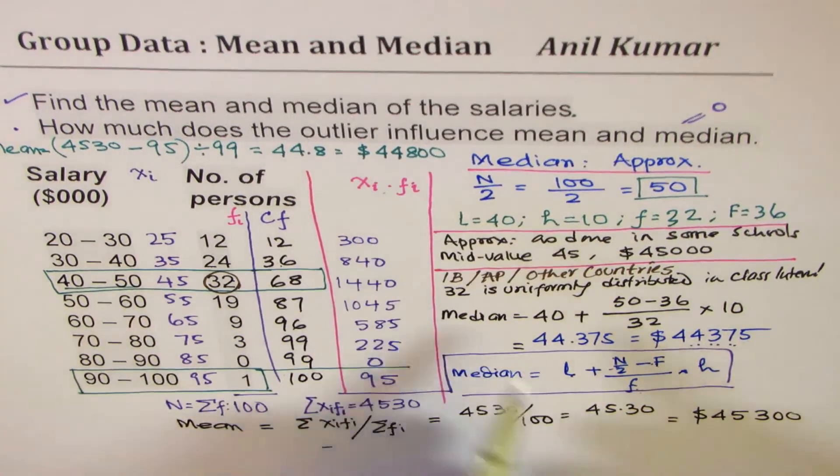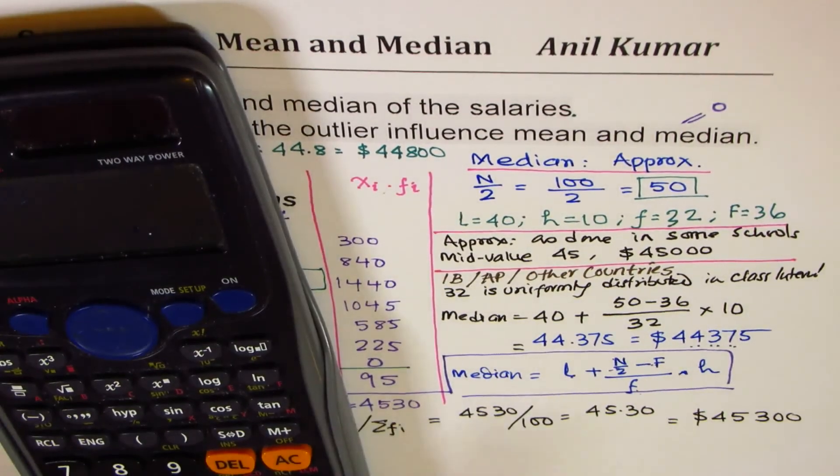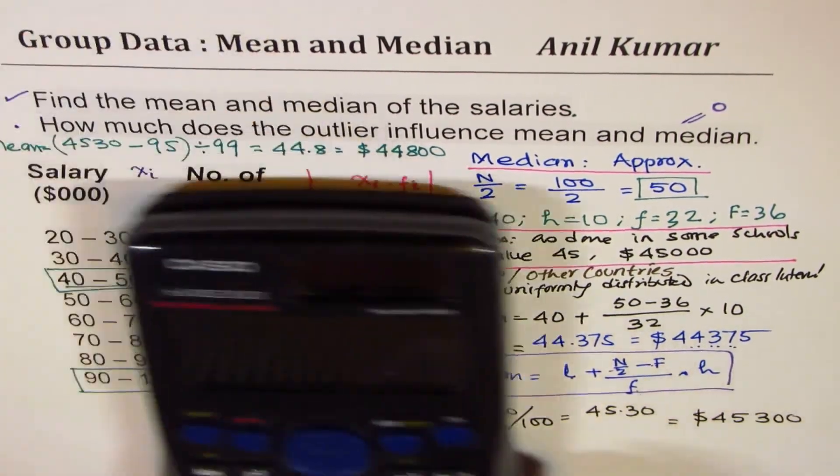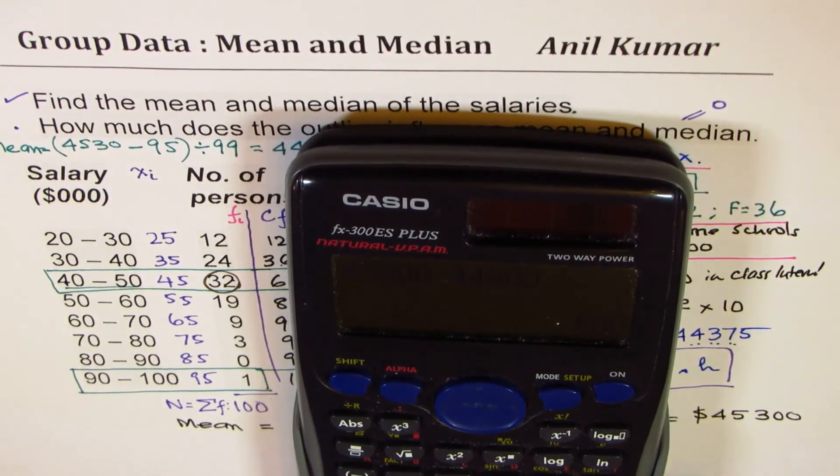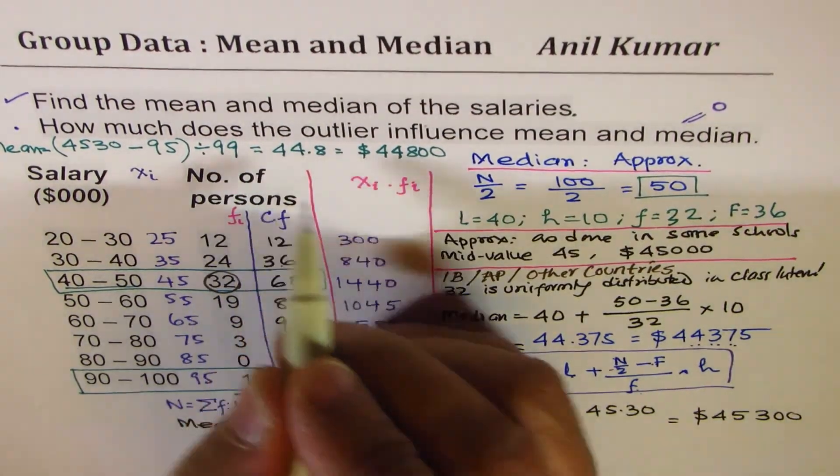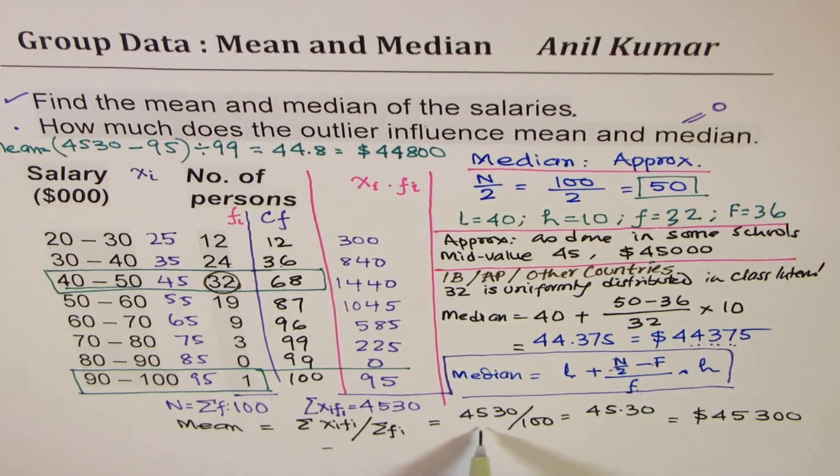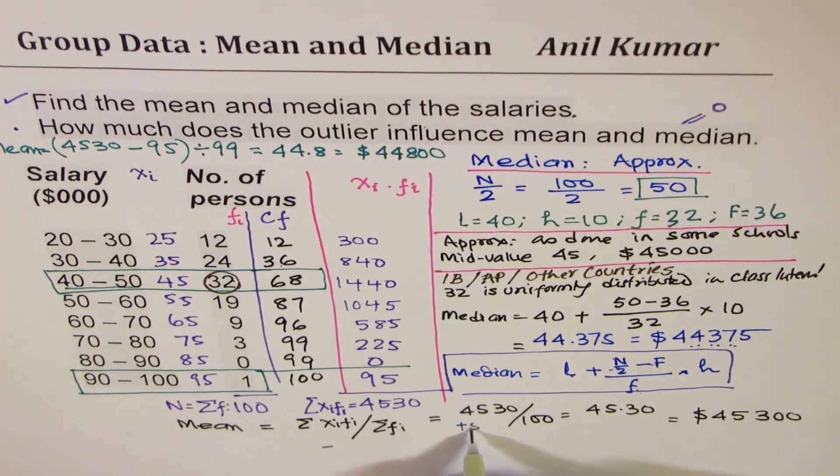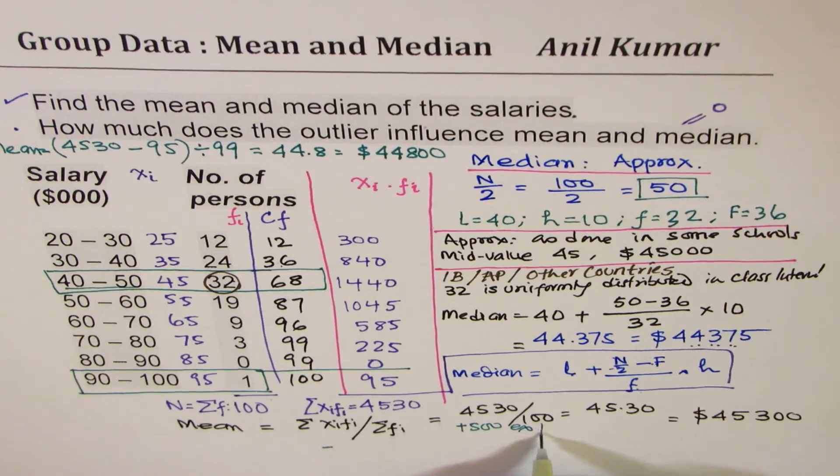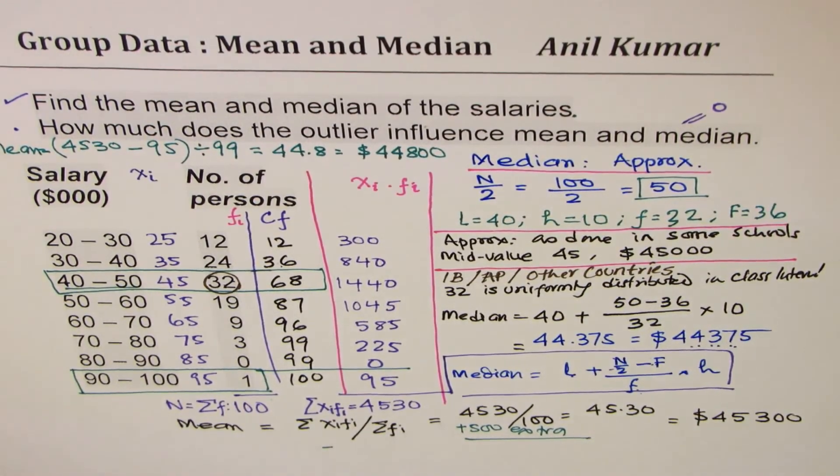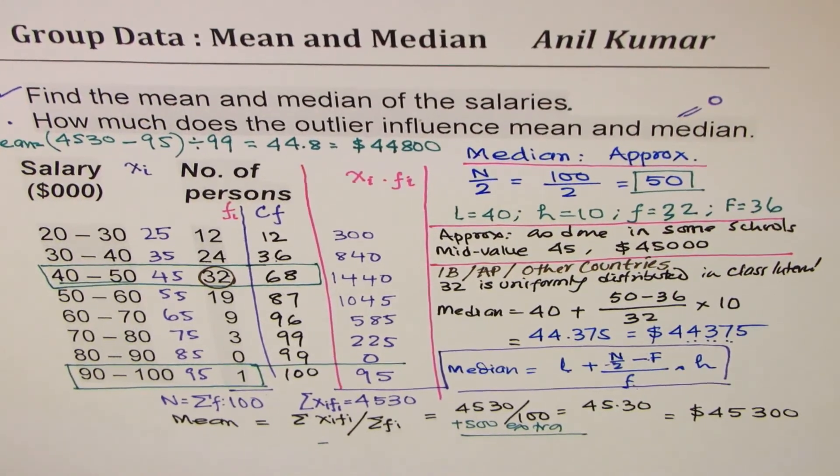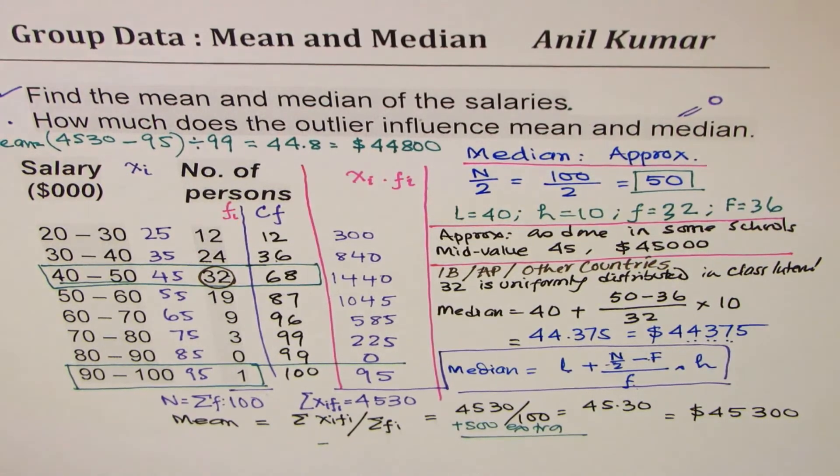So what is the difference here? Let's find the difference. We have 45,300 take away 44,800 is 500. So there is $500 extra because of the outlier. So that is how we can answer part B. Outliers normally influence mean, and they do not influence medians. Very important to take from this particular example.